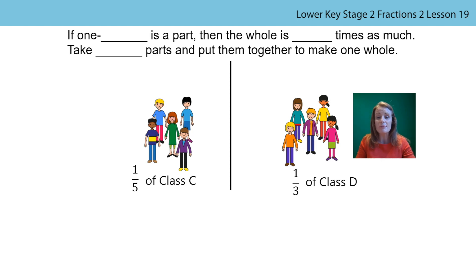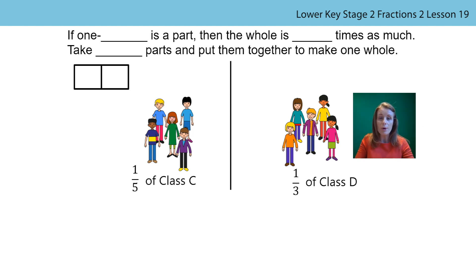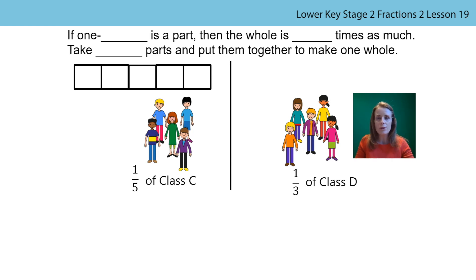To begin with I used our stem sentences from the last lesson. If you were with us last lesson you should be really confident with these now. I used the fraction from Class C to begin with. Can you see the denominator at the bottom — the number five? It shows me that the class needs to be split into five equal parts. See how that fits into our stem sentence: one fifth is a part, then the whole is five times as much. Take five parts and put them together to make one whole. Look at my bar model — I've got five parts. This is a bar model; if you're not familiar with them don't worry, we're going to use some more today. They help us represent our thinking and show what our parts and our wholes look like.